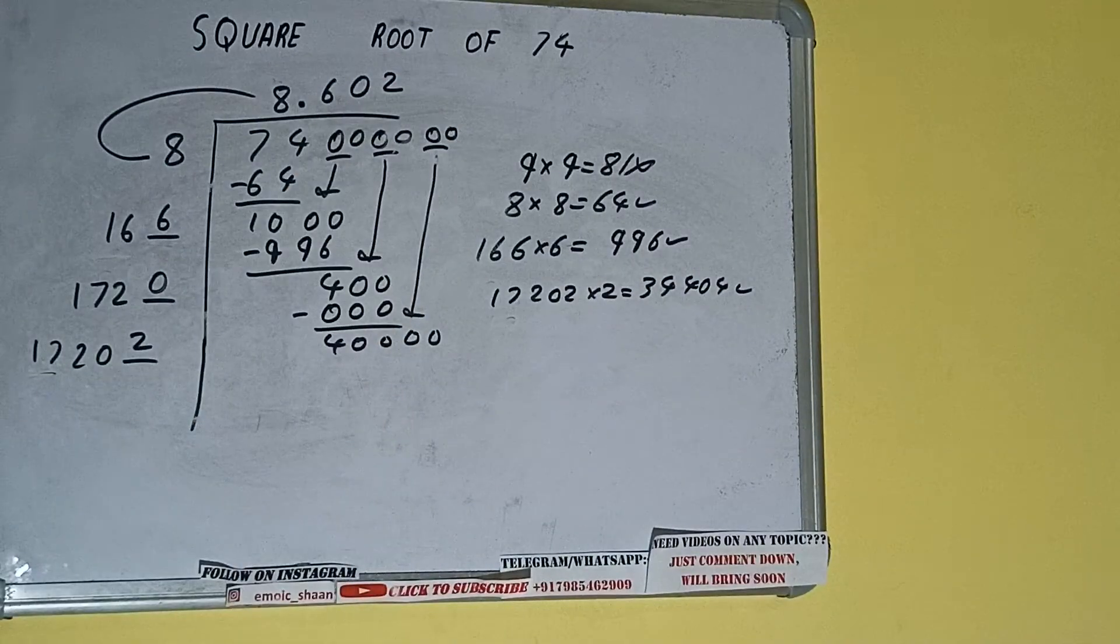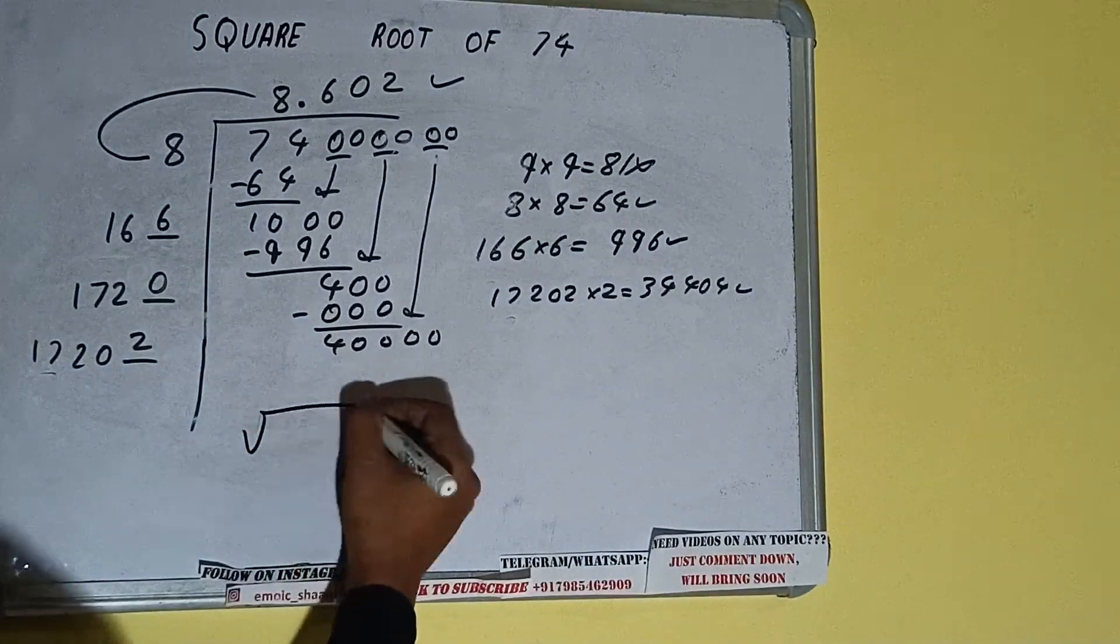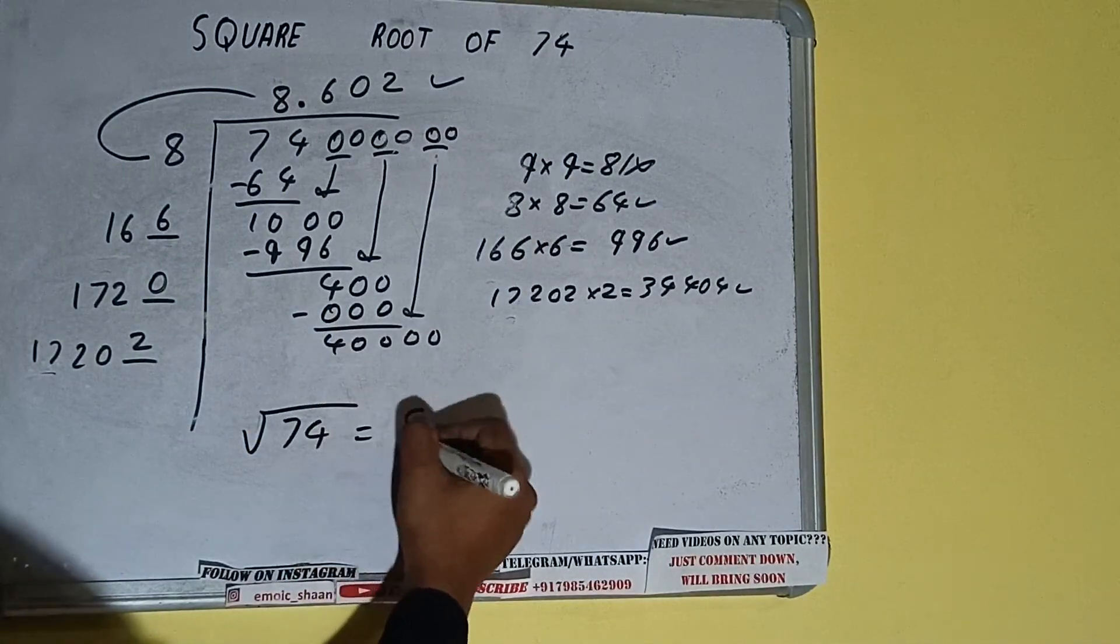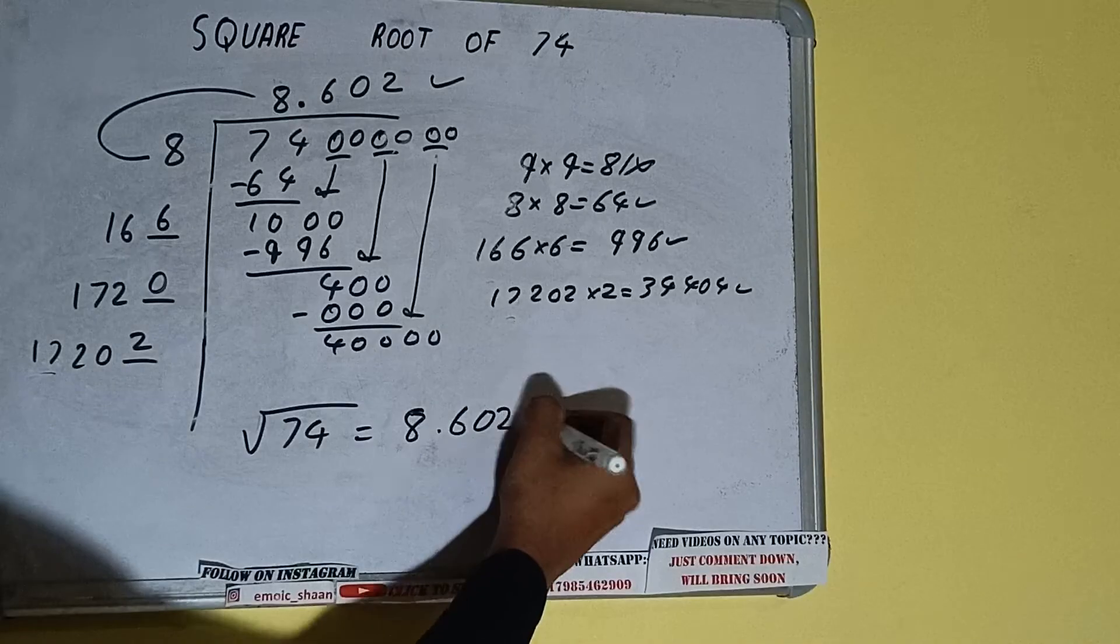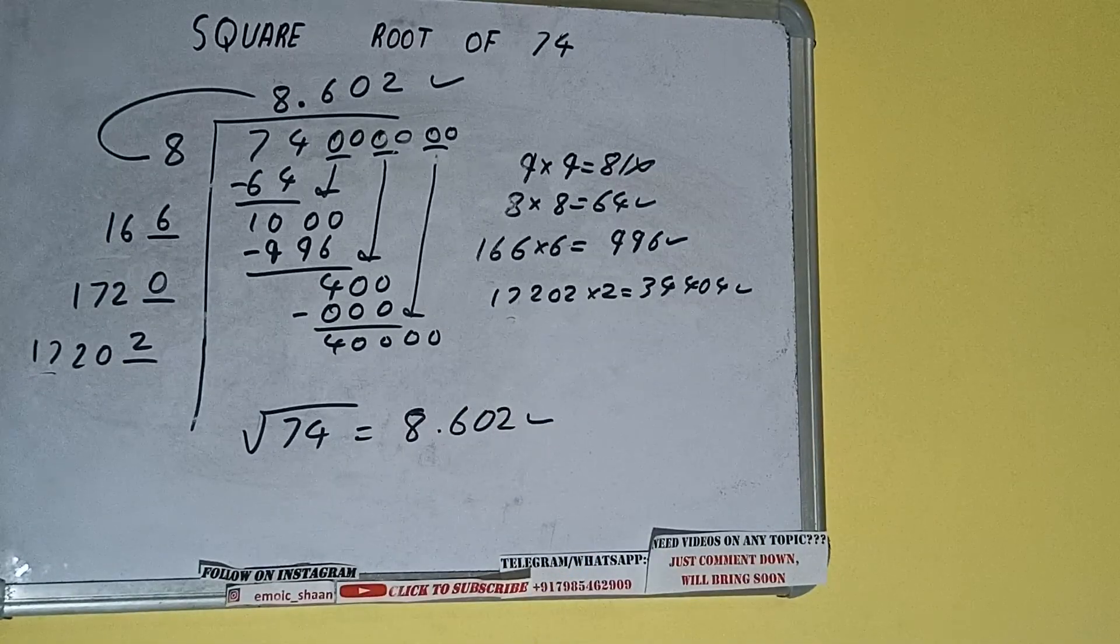But we don't need to calculate because we got the answer correct up to 3 decimal places. So square root of 74 will be 8.602. That will be the answer. So this is all about square root of 74.